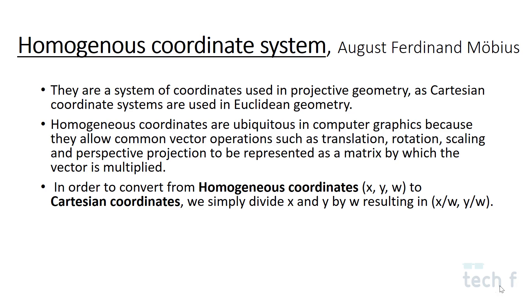X comma Y comma W represents a 2D homogeneous coordinate system. If it was a 3D homogeneous coordinate system, it would have been X, Y, Z, and W. This is another way of representing an n-dimensional coordinate system by n plus one different values.